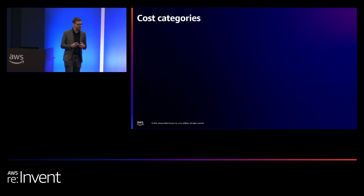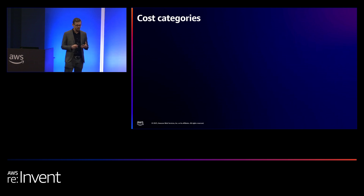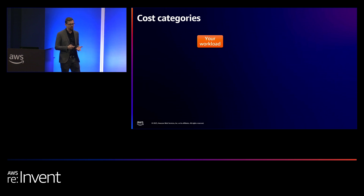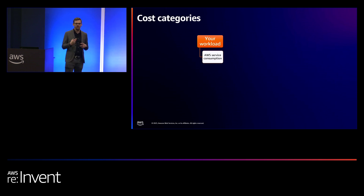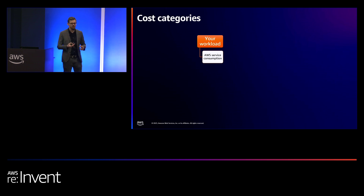Moving into the cost categories, I have divided them into three different categories. First one: your workload. What does that consist of? The AWS service consumption — things like EC2, RDS, Lambda, DynamoDB — all the parts that are actually running your actual workload.